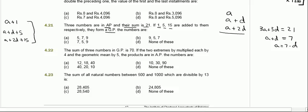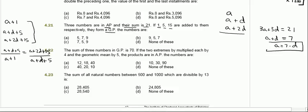For an arithmetic progression, we know that the second term divided by the first term is equal to the third term divided by the second term. We also know from our earlier calculation that a is equal to 7 minus d.